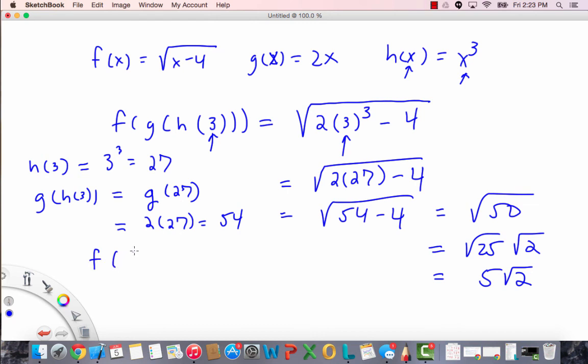And lastly, f of g of 27 is f of 54, which is, going back up to here, root 54 minus 4, which is root 50. And as we already demonstrated, this is 5 root 2. So you get the same answer, not surprisingly.